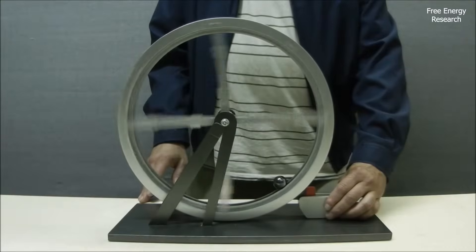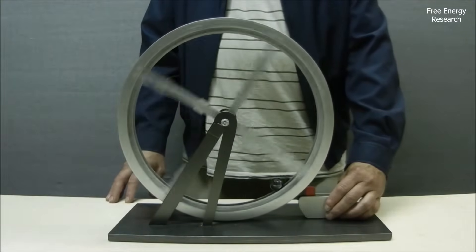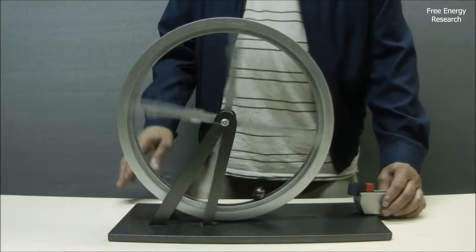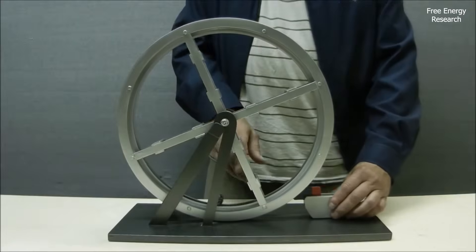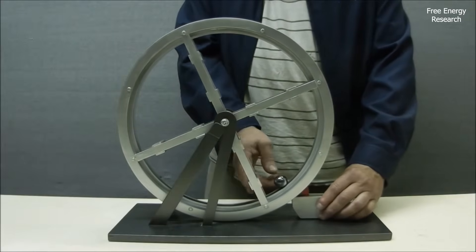As the wheel turns, the magnet draws the ball to one side, shifting the center of gravity and keeping the system in perpetual motion. This imbalance is expected to cause continuous rotation, keeping the wheel spinning indefinitely.